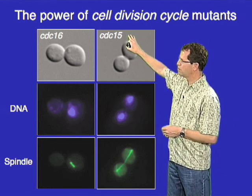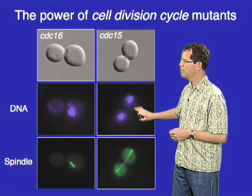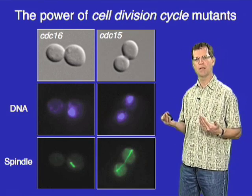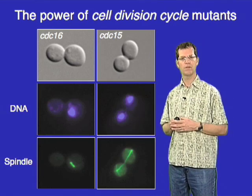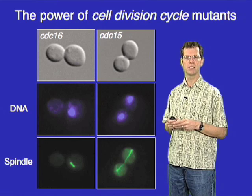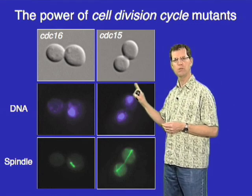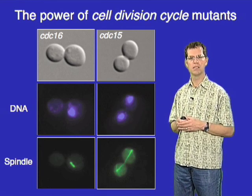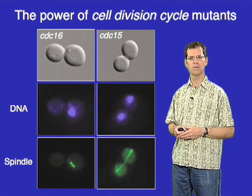CDC15, in contrast, is also a mitotic arrest, but in this case the DNA has segregated into two distinct masses. By looking at the spindle, it's clear that these cells have reached anaphase but not progressed farther — they contain the long anaphase spindle and segregated DNA but arrested at the end of anaphase. CDC15 encodes a component of a regulatory network that drives the cell out of anaphase and into the following G1. By isolating and characterizing large numbers of these CDC mutants, yeast geneticists working in budding yeast and fission yeast — with the work of Paul Nurse and colleagues — built the foundation for our present understanding of cell cycle control.